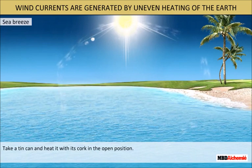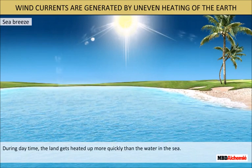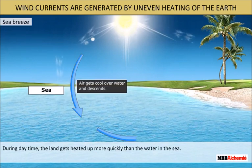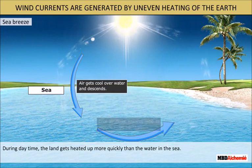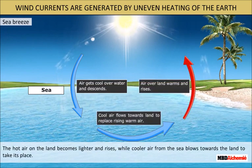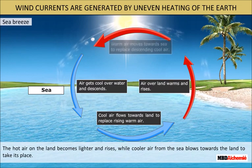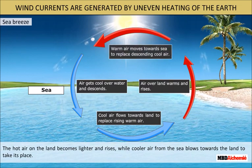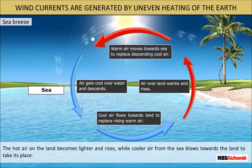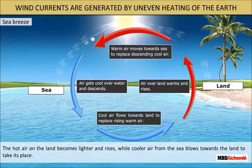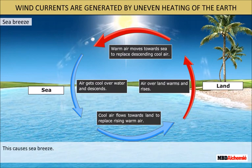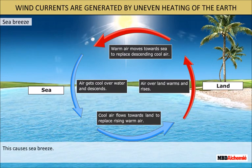Sea breeze. During daytime, the land gets heated up more quickly than the water in the sea. The hot air on the land becomes lighter and rises, while cooler air from the sea blows towards the land to take its place. This causes sea breeze.